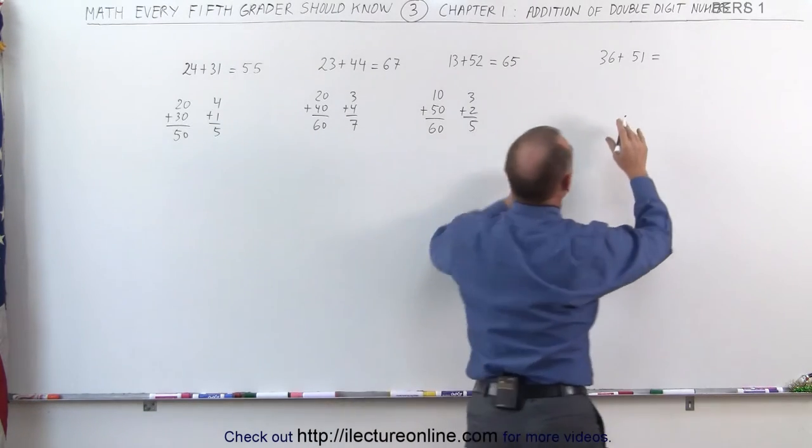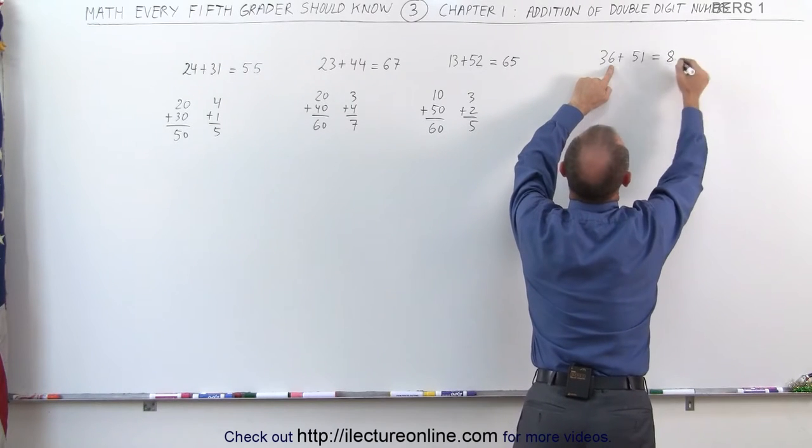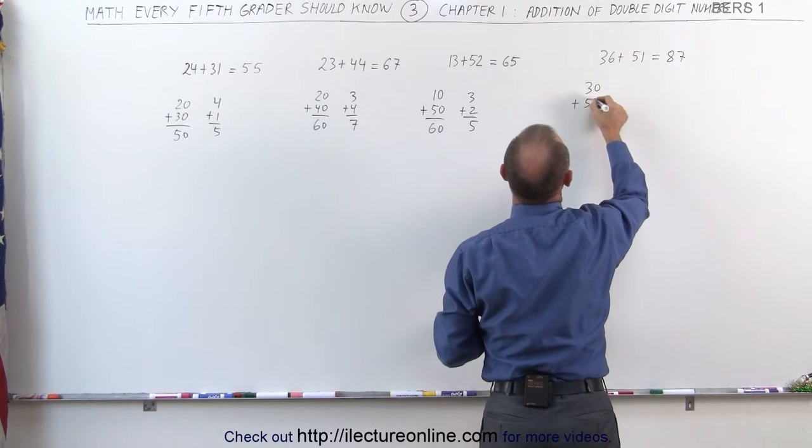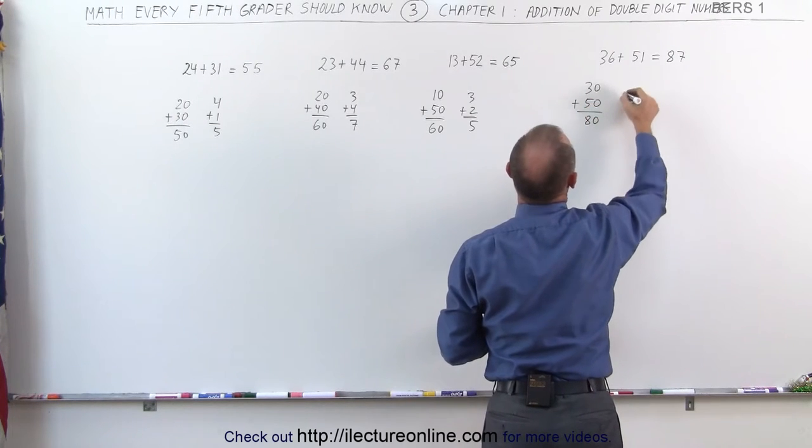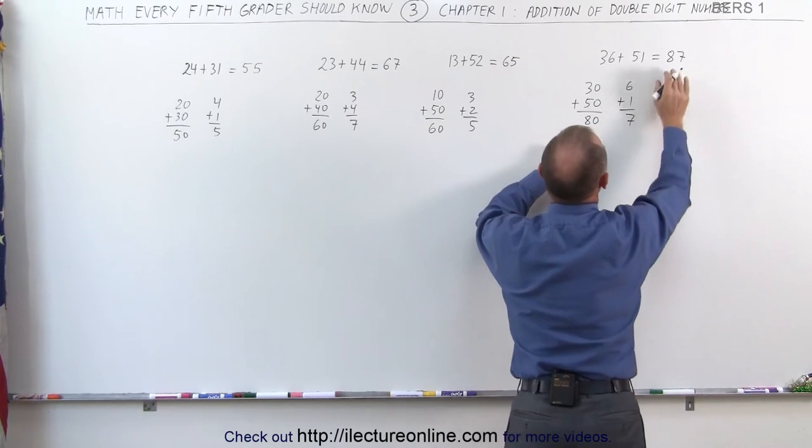And our last exercise, here we see that 3 plus 5 is 8. 6 plus 1 is 7. What we did here was, we took 30, we added that to 50, to give us 80. We took 6, add that to 1, we get 7. 80 plus 7 is 87.